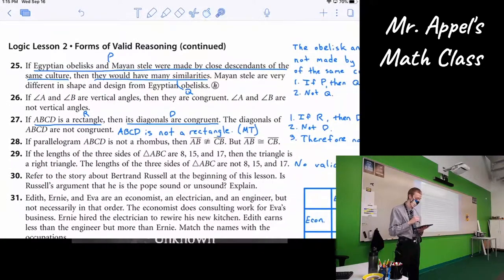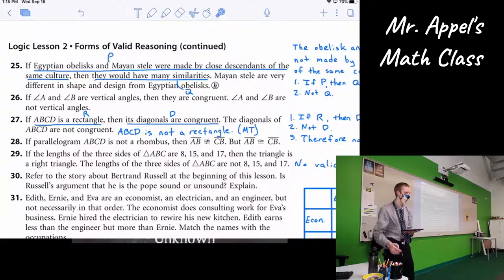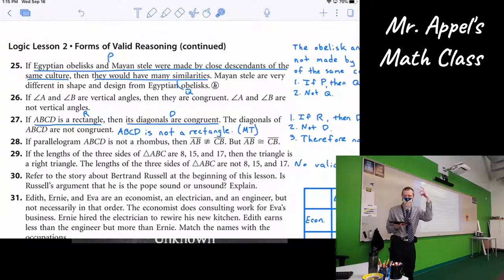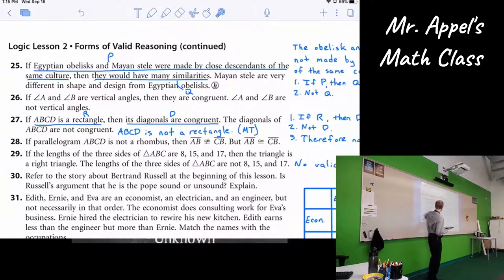Next is 27. If ABCD is a rectangle, then its diagonals are congruent. The diagonals of ABCD are not congruent. Therefore, ABCD is not a rectangle. So once again, if you understand the geometry going on here already, this can help you out as to, well, why that works. But you don't need that. All you need is the logical structure to make this conclusion. I've said its diagonals should be congruent. I then said, in this case, they're not. I have negated the second half of my conditional. So my conclusion is to negate the first half. ABCD is not a rectangle. Modus tollens. If R, then D, not D, therefore, not R.